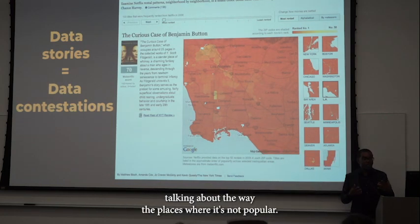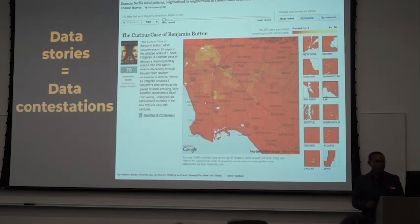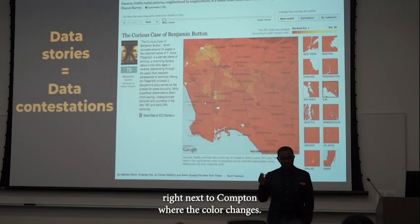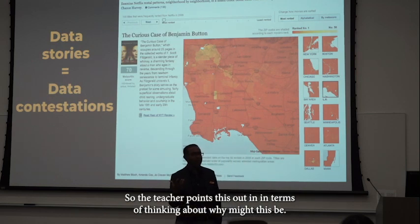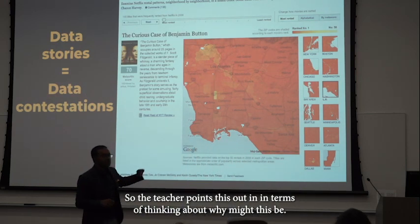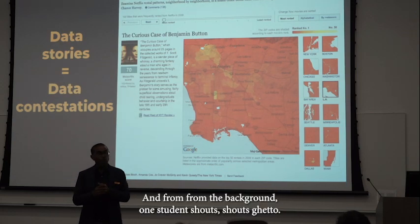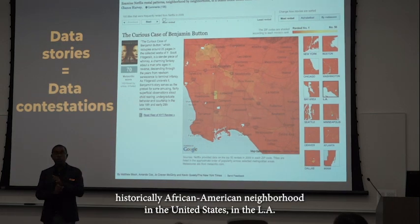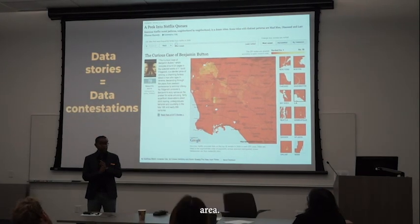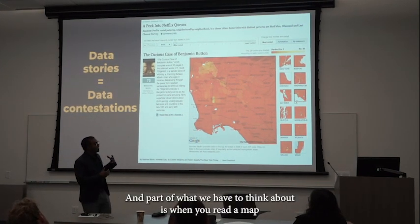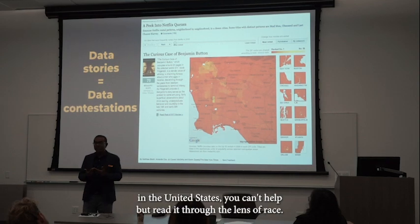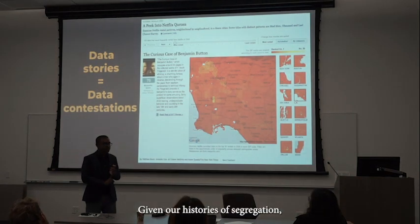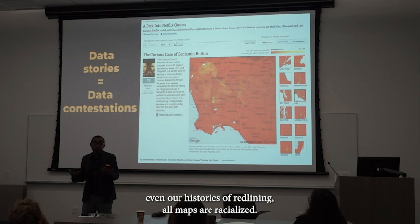The teacher presents it and starts talking about the places where the film was not popular. As you can see, there's an area right next to Compton where the color changes. The teacher points this out in terms of thinking about why that might be. And from the background, one student shouts 'ghetto.' We know that area is a historically African American neighborhood in the LA area. When you read a map in the United States, you can't help but read it through the lens of race.